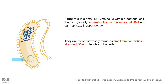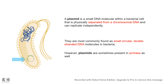As a chemical entity, plasmids are small circular double-stranded DNA molecules. Mostly they are present in bacteria, though some archaea also have plasmids. In this video we'll look at how plasmids can be a useful tool for genetic engineering.